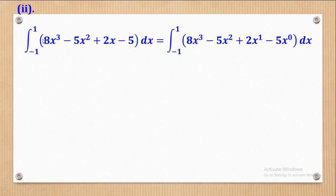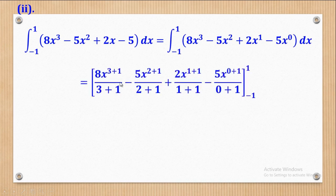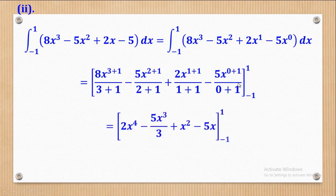Now Roman 2: integrate 8x cubed minus 5x squared plus 2x minus 5 with respect to x from negative 1 to 1. The first thing is to put x power 0 on the constant. Using the same rule — increase the power by 1, divide by the new power for all terms — don't forget the box brackets and the limits. Simplify what is inside the box bracket to get 2x⁴ minus 5x³ over 3 plus x² minus 5x.